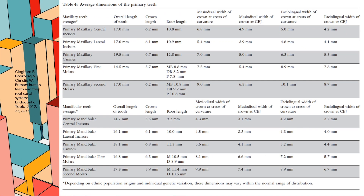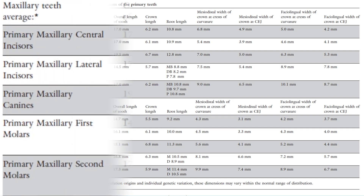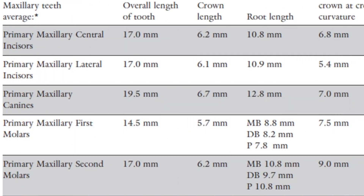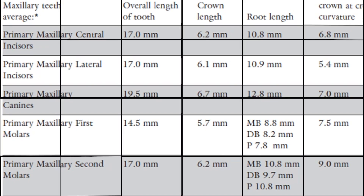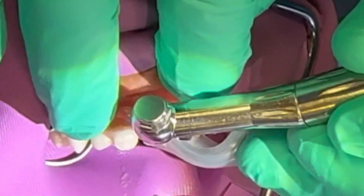A helpful chart from this same study shows maxillary teeth root lengths: the primary maxillary central incisor has an average root length of 10.8 mm, the lateral 10.9 mm, and the cuspid 12.8 mm. This is helpful when estimating or using an apex locator to determine root length. Now we're going to get into the actual case.